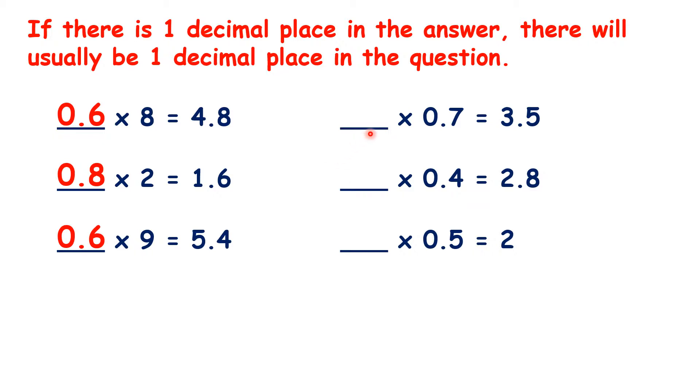We know that 5 times 7 is 35, so 5 times 0.7 is 3.5. Here, we already have one decimal place in the question because we have 0.7, so our missing number is a whole number, not a decimal.